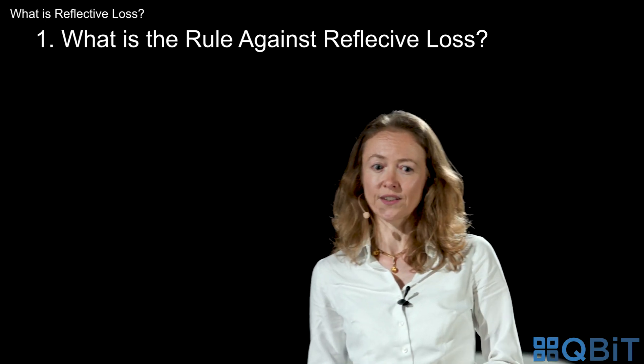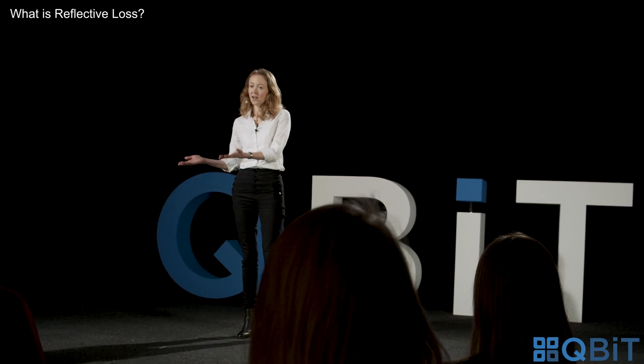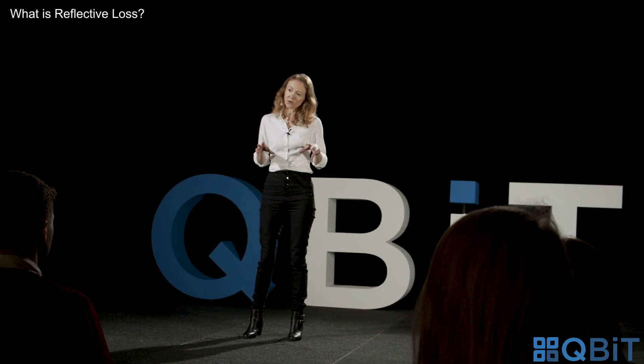So firstly, what is the rule? Well, it's a rule of company law and it's all about who can recover a certain type of loss. In broad terms it arises where there are three parties: there's a company, there's a shareholder in the company, and there's a wrongdoer. The wrongdoer, who is often but not always a director of the company, commits a wrong against the company and causes the company loss. As a result of the loss suffered by the company, the shareholder also suffers loss because the value of his or her shares reduces or the dividends that he or she can recover from the company are reduced.